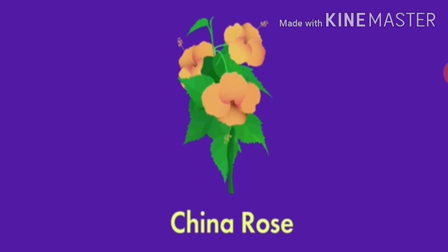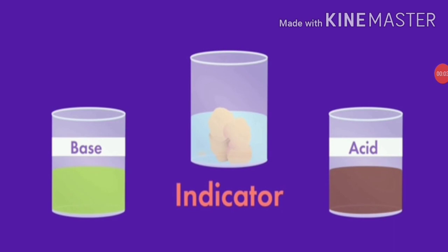That china rose solution is used as an indicator to test the acidic and basic nature of substances. In an acidic medium, china rose exhibits a dark pink, magenta color. While in basic solution, it exhibits green color. In this way, by the help of china rose solution, we can identify whether the solution is acidic or basic.